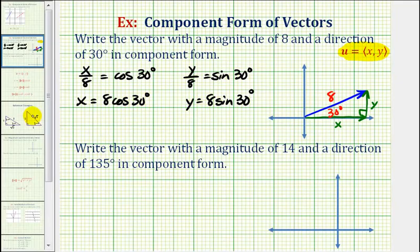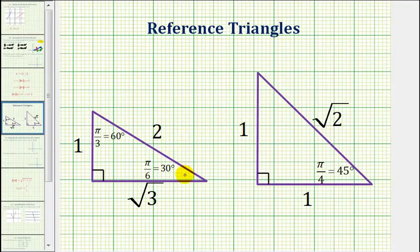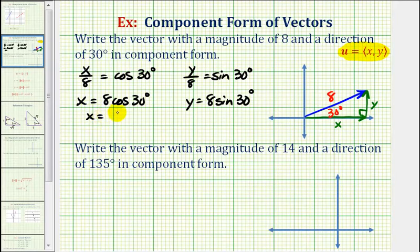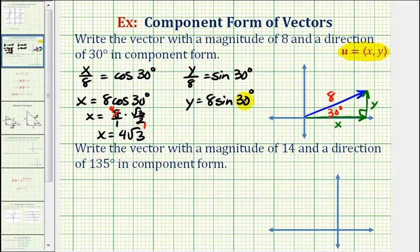We're using our 30-60-90 right triangle here. Cosine 30 degrees is equal to square root three divided by two, and sine 30 degrees is equal to one half. So we have x equals eight times square root three over two, which simplifies to x equals four square root three. And since sine 30 degrees is equal to one half, we have y equals eight times one half, which simplifies to y equals four.